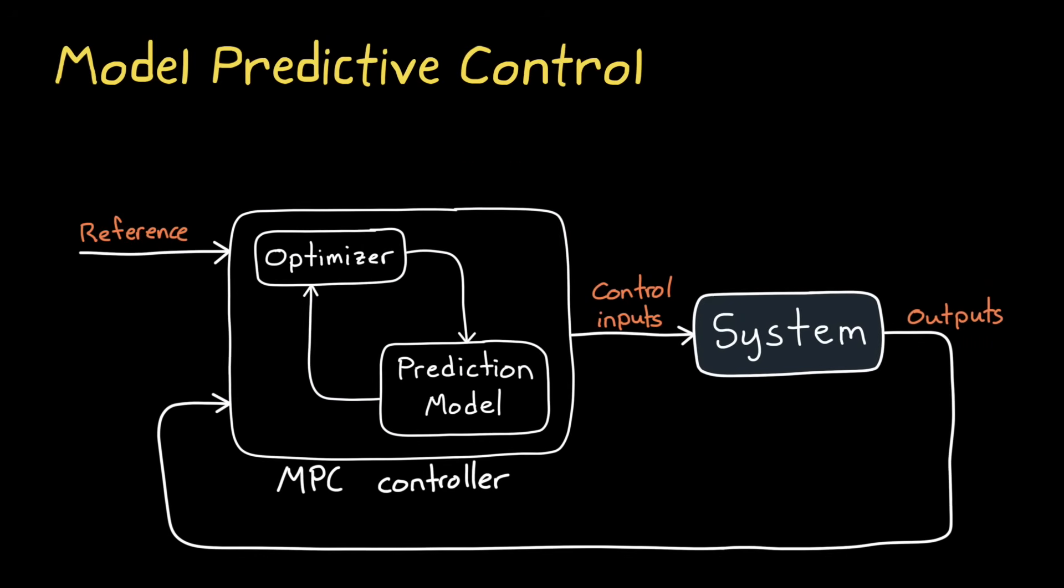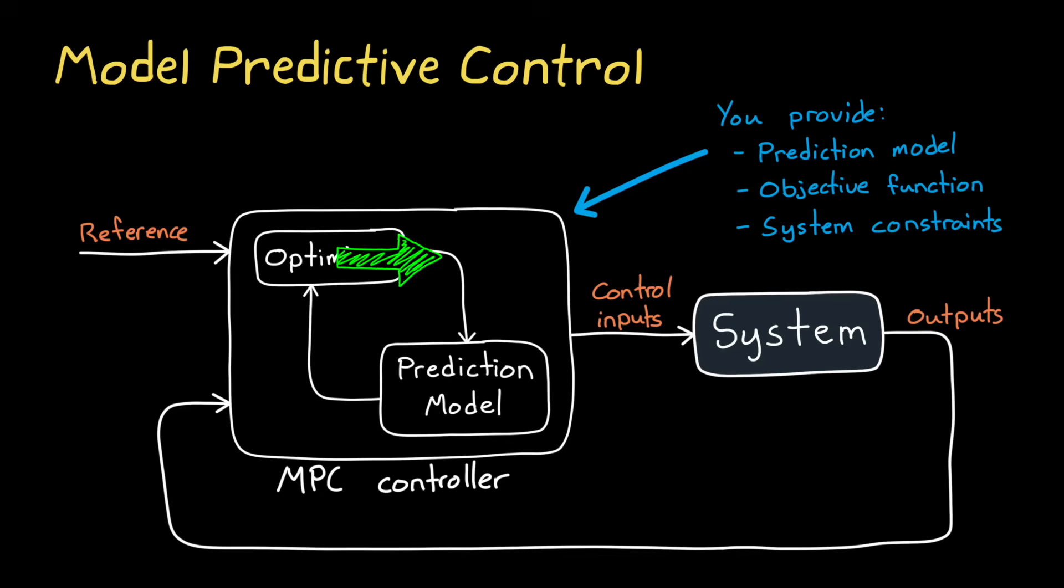Now there is another class of controllers altogether which is called Model Predictive Control. And MPC uses a model of the system to predict and optimize future behavior over a specific time horizon. And the basic approach is that you provide the controller with a model and an objective function that you want to maximize and then also a set of constraints on the system. And then at each time step, MPC uses the model to solve the optimization problem to determine the best control actions that maximizes the objective while satisfying the constraints on the system.